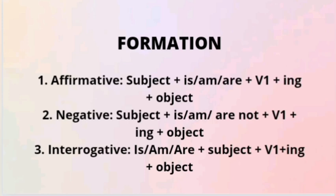In case your sentence is affirmative, it starts with the subject, is/am/are, plus verb plus -ing, and object. 'Is' is used with singular, 'are' with plural, 'am' with I, and 'are' with you. In case the sentence is negative, the sentence starts with subject, is/am/are plus not, verb plus -ing, and object. If your sentence is interrogative, it begins with is/am/are, subject, verb plus -ing, and object.